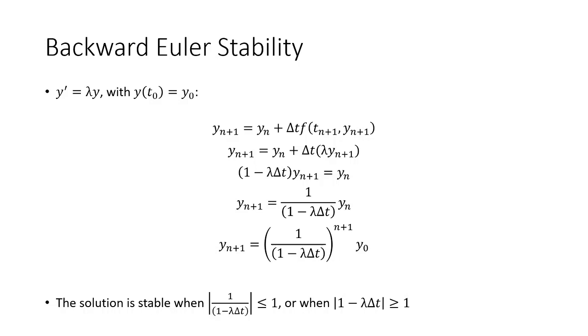So now you're going to see that it's this quantity here that has to be less than or equal to 1. This 1 over 1 minus lambda delta T. So that's our stability condition for the backward Euler method. It's stable when the absolute value of 1 over 1 minus lambda delta T is less than or equal to 1. We rearrange that. It's stable when the absolute value of 1 minus lambda delta T is greater than or equal to 1. So an interesting and different stability condition from the forward Euler method. But again, it gives us insight into a proper delta T.